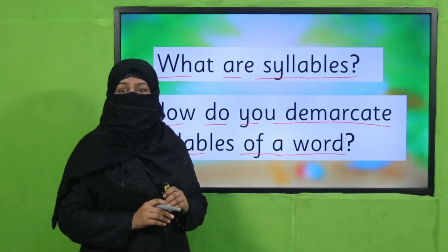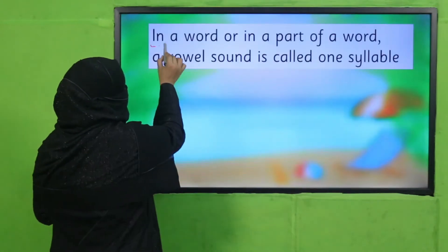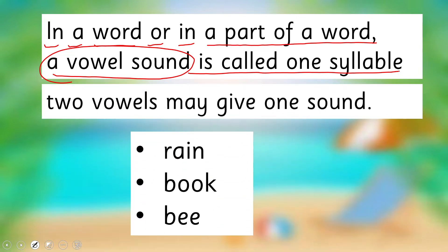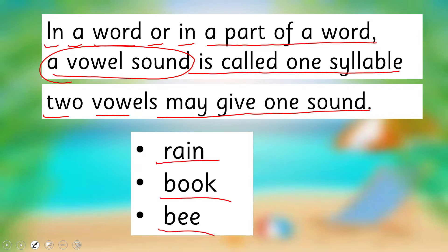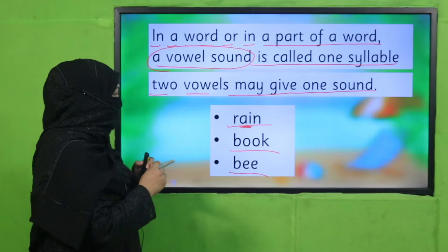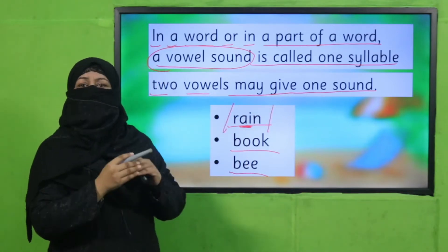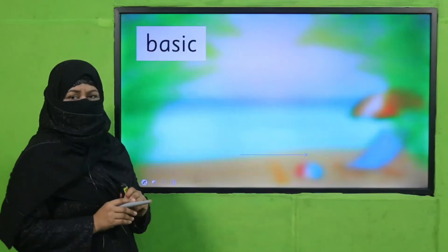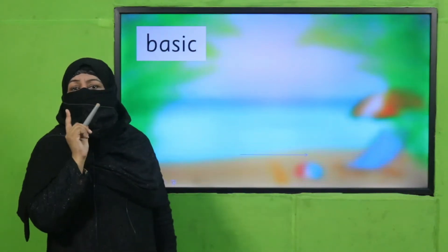We have already studied about syllables, so I hope you could answer correctly. In a word, or in a part of a word, a vowel sound is called one syllable. Remember — a vowel sound, not a vowel, because sometimes two vowels may give one sound, as in 'rain' and 'book.' Though we find two vowels, they have one sound. We studied digraphs — when two vowels give one vowel sound, it still becomes one syllable. Now, let's take the example of the word 'basic' — how many syllables, how many vowels can you find here?